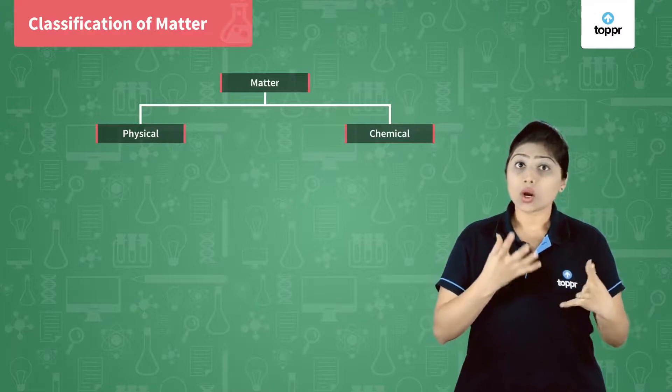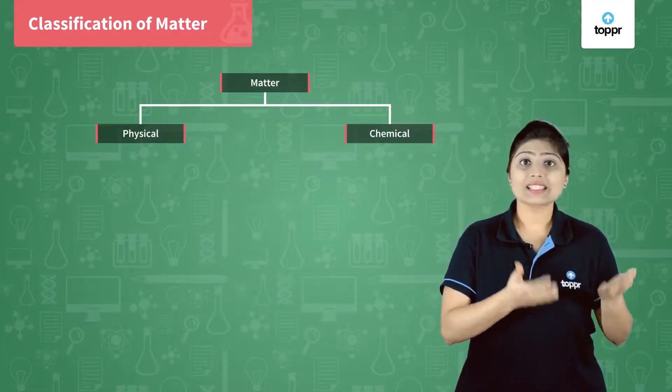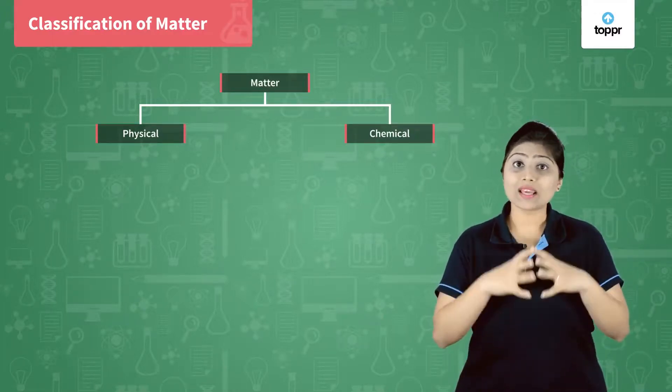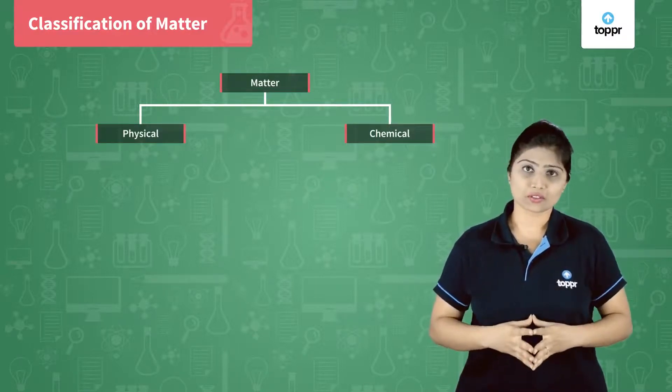For example, oxygen supports burning. This is its chemical nature that depends upon the chemical structure of oxygen.